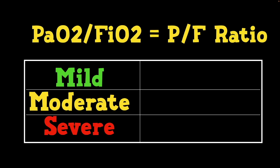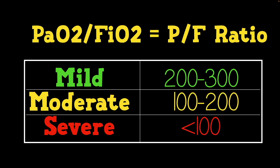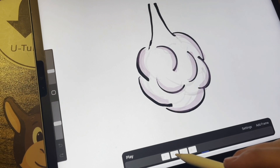Let's look at the severity scale for ARDS. Mild is going to be between 200 and 300. Moderate is 100 to 200. And severe is anything less than 100. But you have to make sure the patient is on at least 5 of PEEP, just to make sure it's not atelectasis that could easily be reversed. So where did I sit? My ratio was 210, which means I would be mild ARDS according to the PF ratio with the Berlin definition.